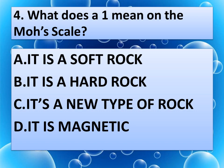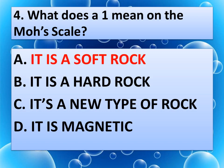What does a 1 mean on the Mohs scale? Read the options very carefully. Option A: It is a soft rock. Option B: It is a hard rock. Option C: It is a new type of rock. Or option D: It is magnetic. Keep your answer in the comment box. And the correct answer is Option A: it is a soft rock.